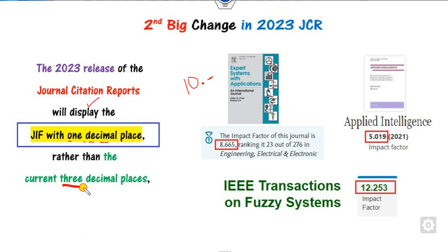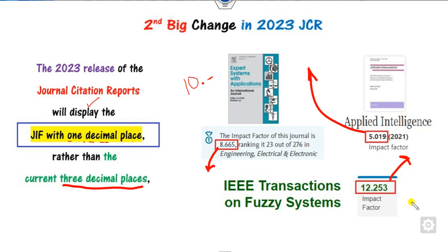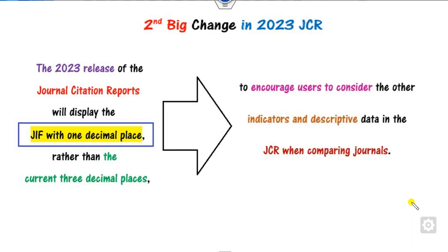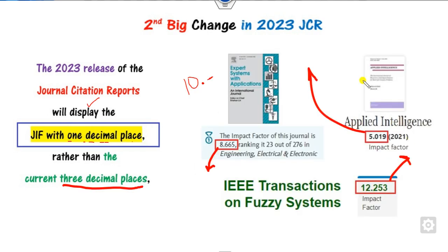With three example journals shown, all impact factors will change to one decimal place. The rationale behind this change is to encourage users to consider other factors and descriptive statistics in the JCR when comparing journals. For example, if one journal has an impact factor of 5.010 and another has 5.019, they are almost similar. This new one-decimal-place format will overcome such negligible differences in the June 2023 JCR report.